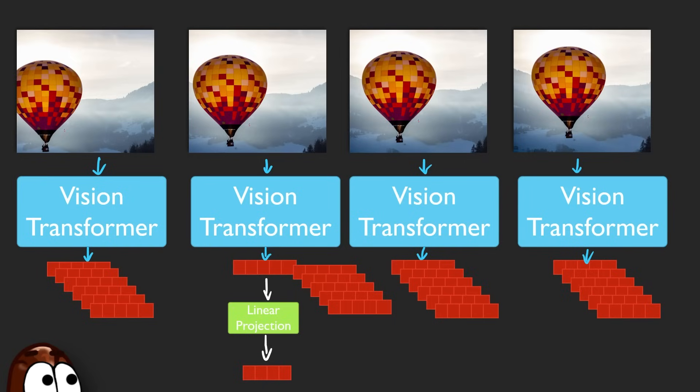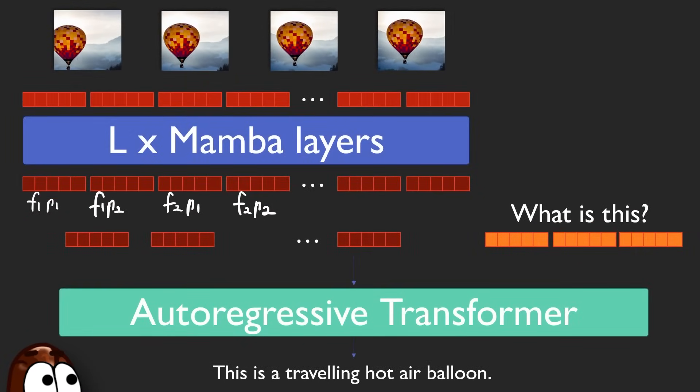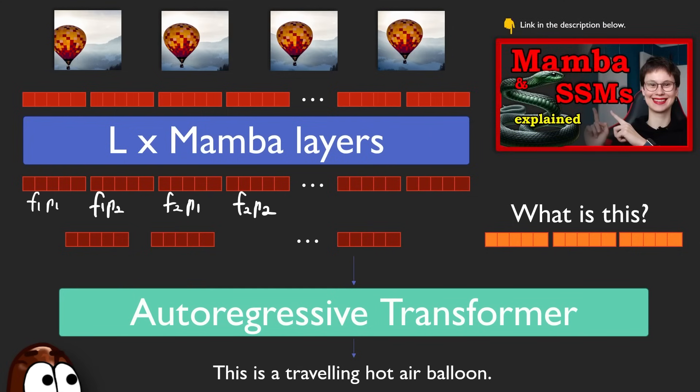Then come the Mamba layers to process these reduced vectors. The Mamba layers sit between the vision transformer and the language model. Unlike typical transformers, Mamba is a state space model—an architecture designed for long sequences—and efficiently fuses information across the sequence one token at a time, much like a linear RNN. We've made a video about Mamba, so watch it to find out how it works in detail.